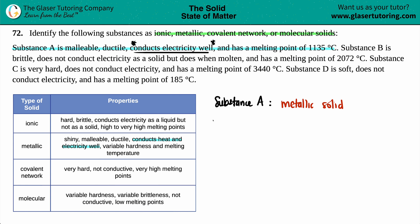Moving on to substance B. Substance B is brittle — it breaks when you try to touch it. It does not conduct electricity as a solid, but does when it's molten, and has a melting point of 2,072 degrees Celsius.